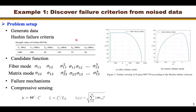We proposed a problem to demonstrate that it is possible to apply the proposed method to discover failure criteria from noisy data. To generate the data, we use the Hashin failure criteria. The material was chosen to be E-glass fiber and Y750 composites, and this table shows the strength properties of this material. The failure envelope according to the Hashin failure criteria is shown on the right picture. We selected candidate functions up to quadratic form and followed Hashin failure mechanisms, leading to four columns of target values in sparse regression. Compressed sensing is implemented by dividing the candidate functions by their L2 norm.